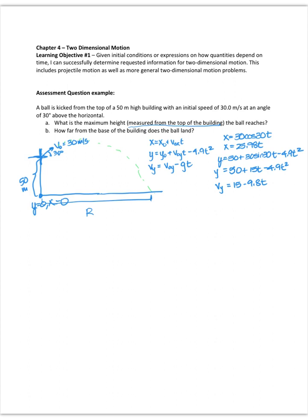So these become my equations that I'm going to work with for this problem. In the first part, for part a, I want to find the maximum height. And I know that the maximum height is reached when the y velocity is equal to zero.